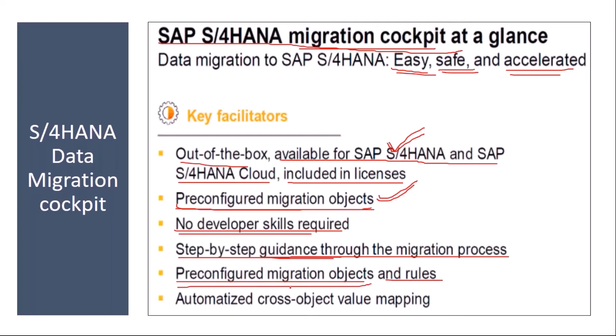The data migration cockpit also provides automated cross-object value mapping, and the value mapping is already available in the system. These are the key features of the data migration cockpit.